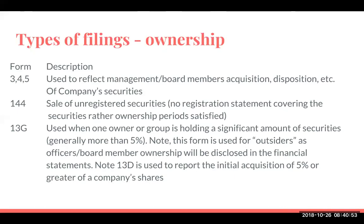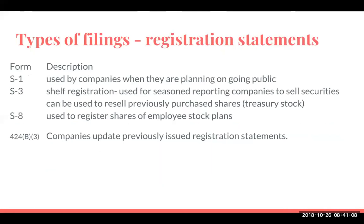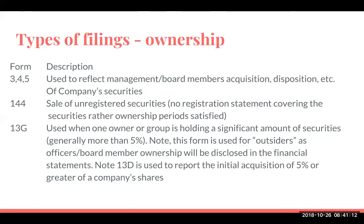Other types of filings include Forms 3, 4, and 5, which are used to reflect management or board members' acquisitions and dispositions of company securities. A Form 144 is used when somebody owns stock not on a registration statement and wants to sell those shares. A Form 13 is used when an owner reports their ownership interest. Generally, if one person or a group owns or has a controlling interest in more than 5% of a company, that has to be filed with the Securities and Exchange Commission. You'll often see investors owning up to 4.99% because they don't want their share ownership to be publicly available.